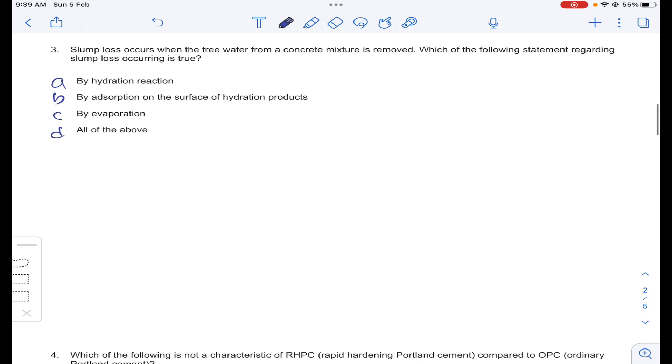Coming to question number 3, slump loss occurs when free water from concrete mixture is removed. Slump loss due to free water removal. Free water will be removed by hydration reaction and adsorption on the surface of hydration products and by evaporation by temperature.